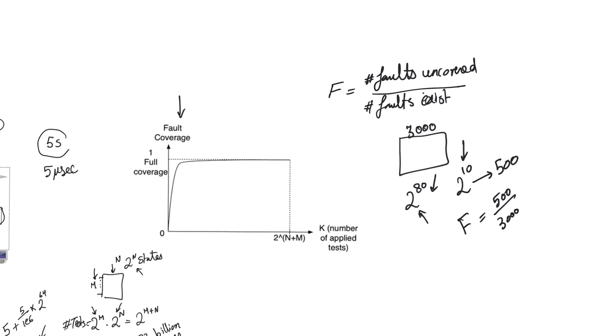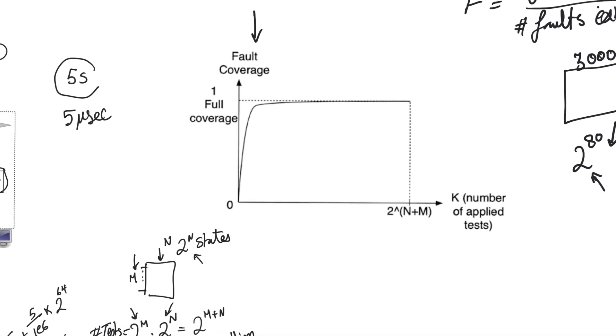And so obviously, fault coverage is a number that ranges between 0 and 1. When we apply 2 to the power of n plus m tests, this means that we have applied all of the tests that we can apply. And this means that at this number of tests, fault coverage has to be 1. Because if there's any fault, one of these tests will uncover it. When we apply no tests, 0 tests, then we have a fault coverage of 0.